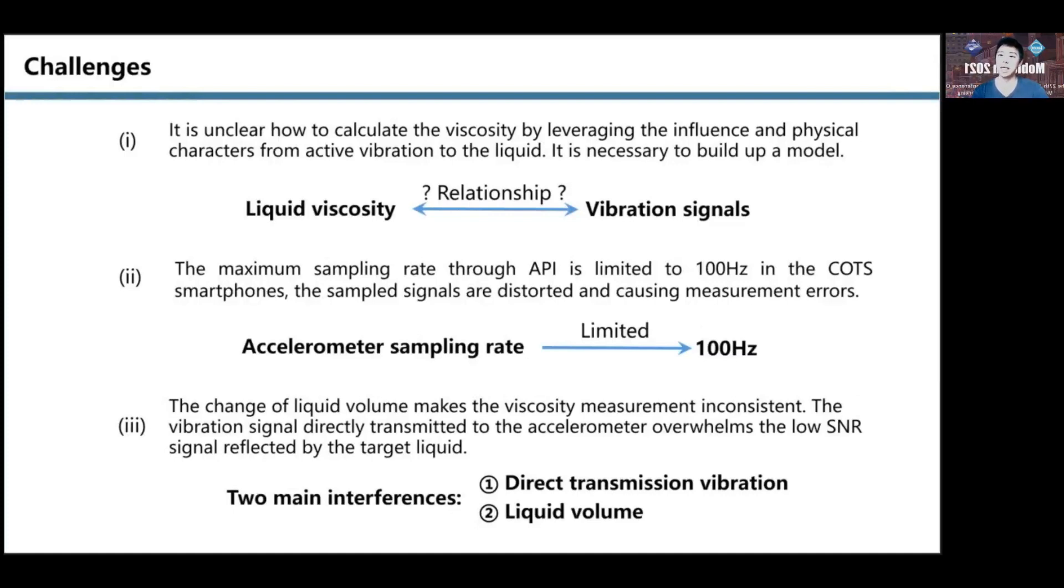Second, the maximum sampling rate through the API is limited to 100 Hz in commercial smartphones, and the sampled signals are distorted. This will cause significant measurement errors.